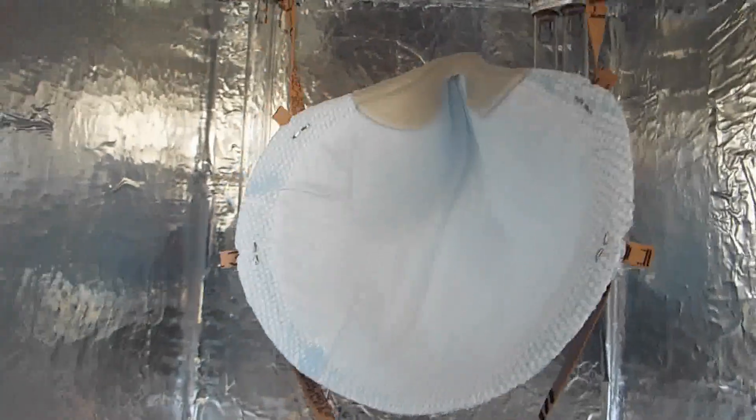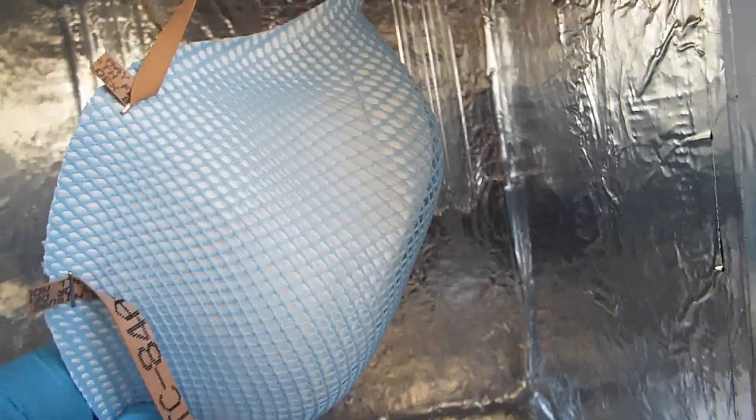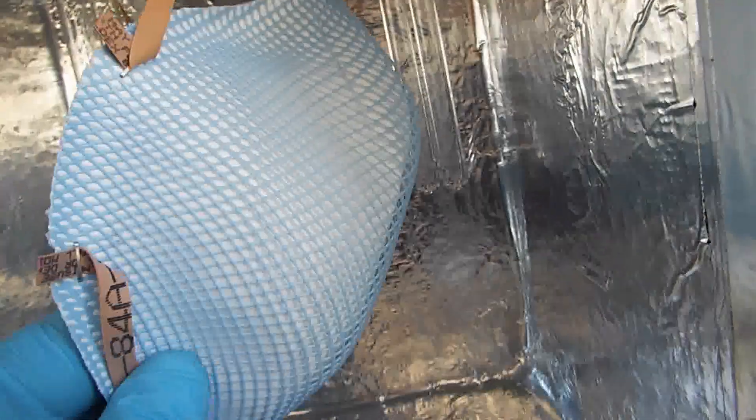This minimizes shadowing effects. So you can see, if the mask were just sitting here stationary, you see that net on the front of it.